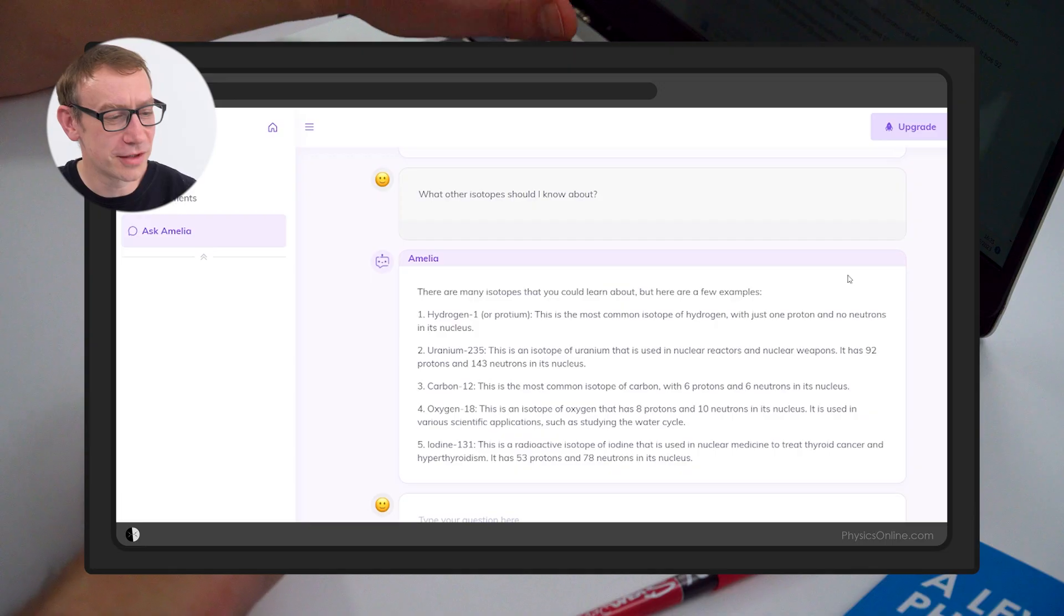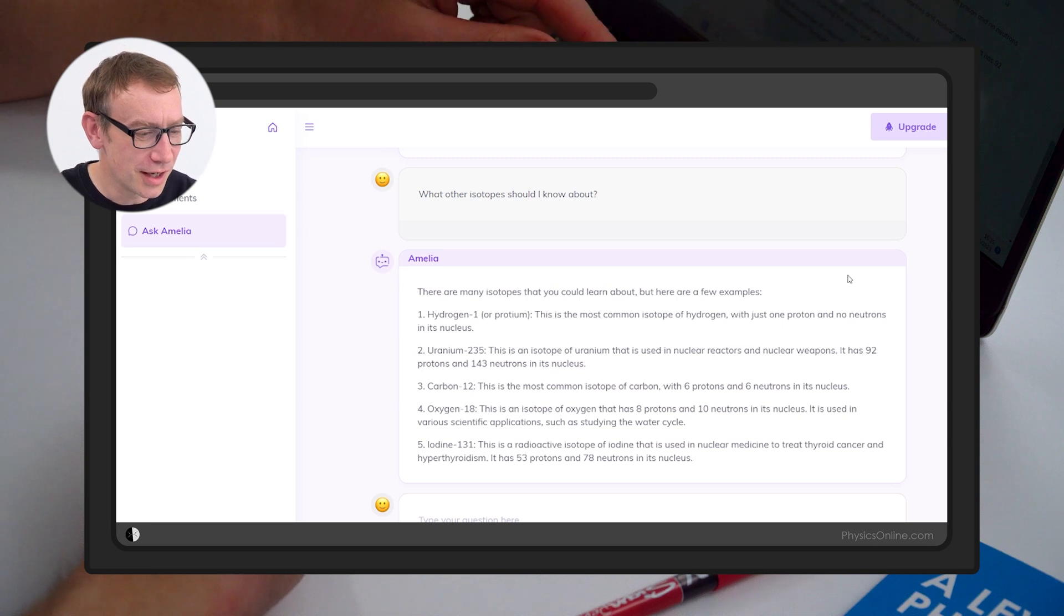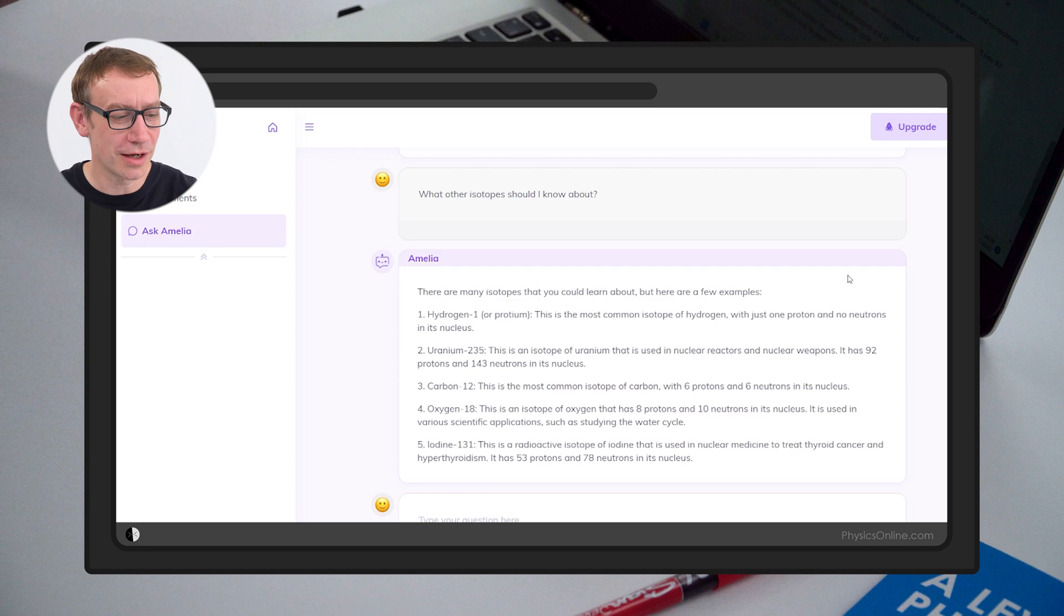Carbon-14 is radioactive and used in radioactive carbon dating to determine the age of organic materials. And of course, you can keep that chat going if there's anything you want to find out more about. What other isotopes should I know about? Hydrogen, uranium-235, carbon-12, oxygen-18. Yeah, all that good stuff.